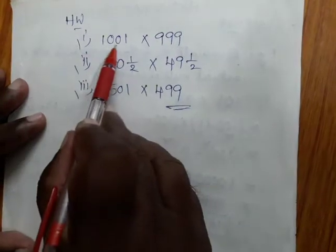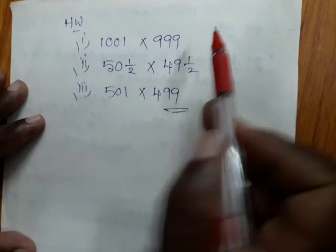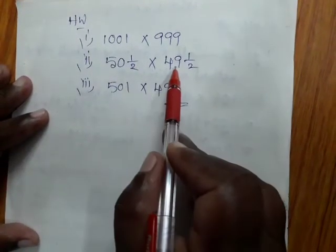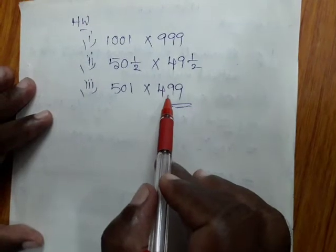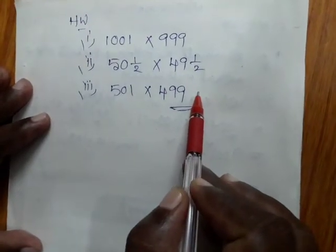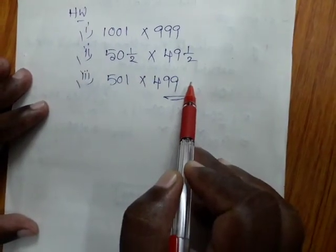See children, 1001 is 1000 plus 1. Write down. 999 is 1000 minus 1. 50 plus half, 50 minus half. 500 plus 1 and 500 minus 1. With this identity, you have to do these sums. Thank you. Thank you so much.